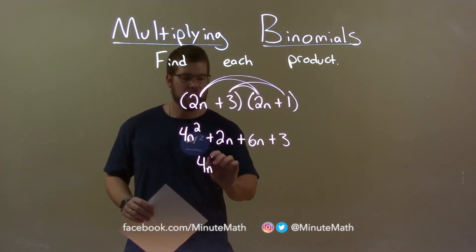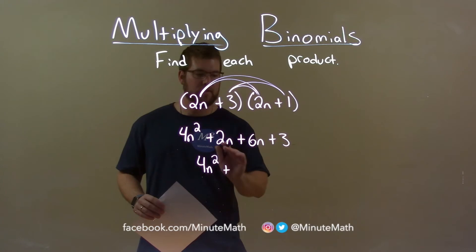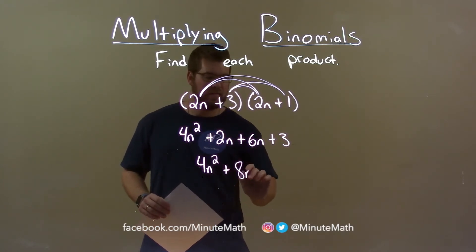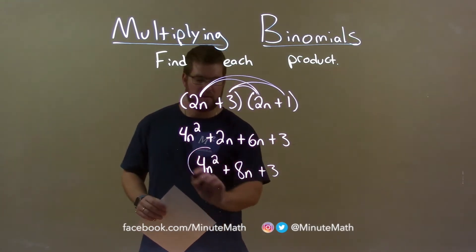So we bring down the 4n squared and 2n plus 6n is 8n. And we bring down the plus 3 to get our final answer, 4n squared plus 8n plus 3.